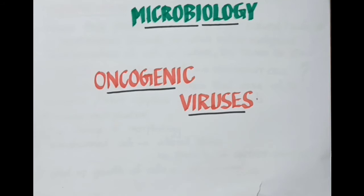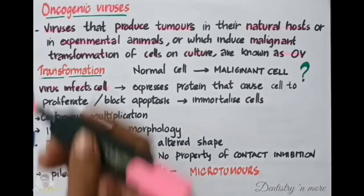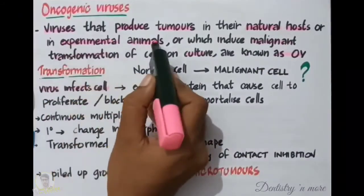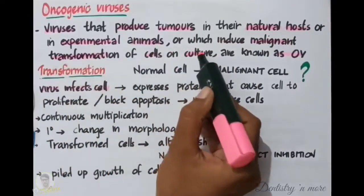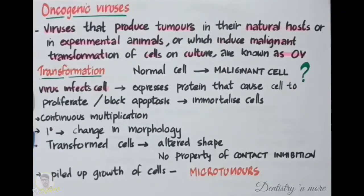Hello, today we'll be discussing oncogenic viruses. Oncogenic viruses are viruses that produce tumors in their natural host or in experimental animals, or which induce malignant transformation of cells in culture. Simply put, oncogenic viruses are viruses that are capable of transforming a normal cell into a malignant cell.